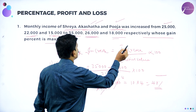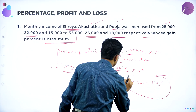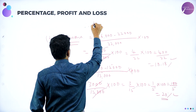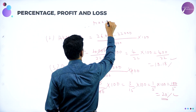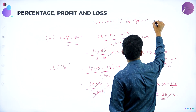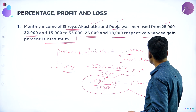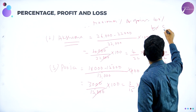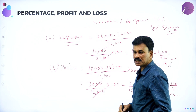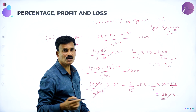So whose gain percent is maximum? Shreya's gain is maximum. Therefore the maximum percentage of gain is 40 percent, and that is for Shreya. Shreya will get a maximum percent of increase, that is 40 percent.